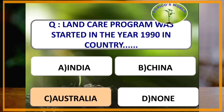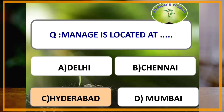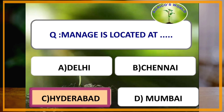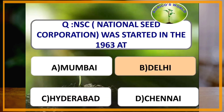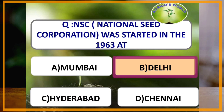Land Care Program was started in the year 1990 in which country? The answer is Australia. MANAGE — National Institute of Agriculture Extension Management — is located at Hyderabad and was started in the year 1987. NSC — National Seed Corporation — was started in the year 1963 at which state? The answer is Delhi.